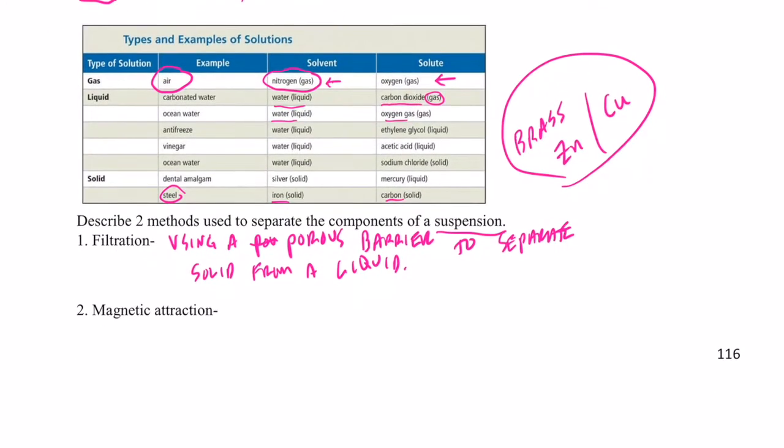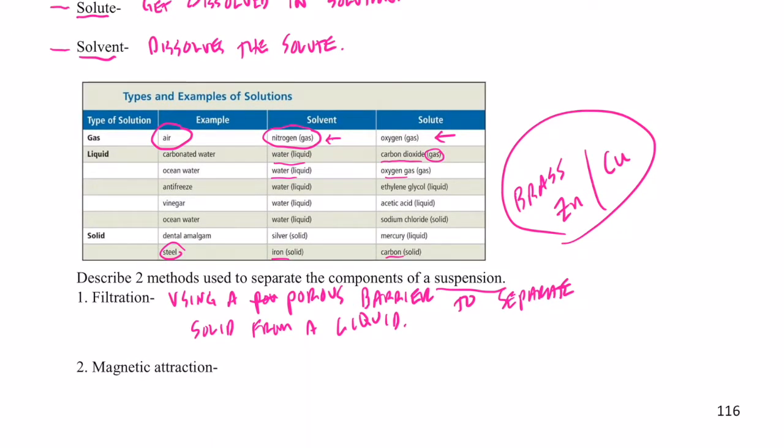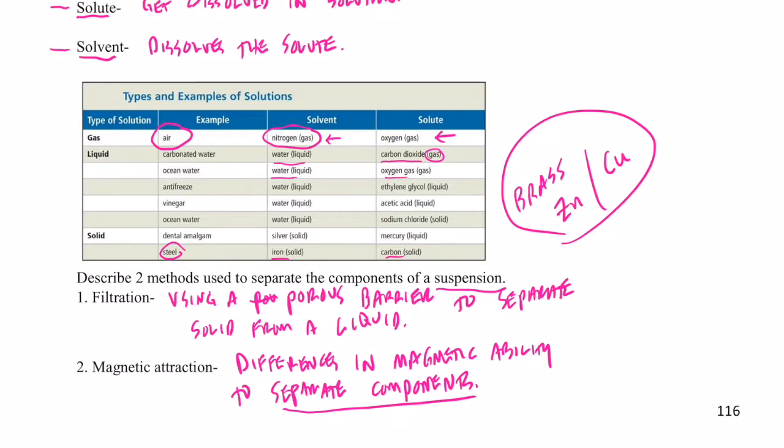Now, magnetic attraction, that's also something that I'll bet you have an intuitive understanding of. Magnetic attraction is simply the differences in magnetic ability to separate the components of a heterogeneous mixture. So if I had sand mixed with iron filings, for example, it was all mixed together, I could hold a magnet over that mixture, and the iron filings would be attracted to the magnet, but the sand wouldn't. And so I could use differences in magnetic ability to separate the components of a heterogeneous mixture.